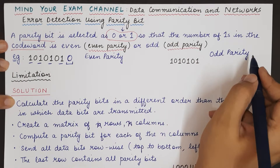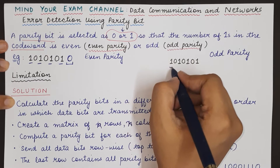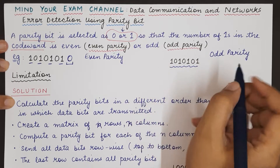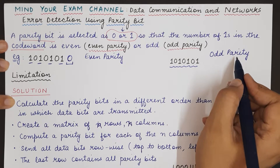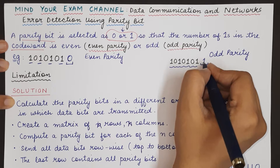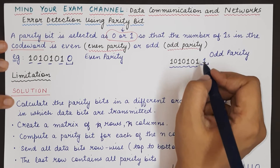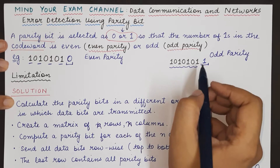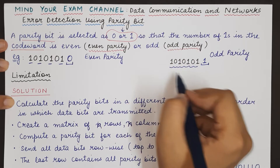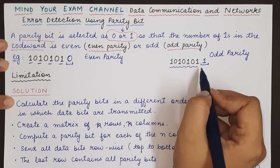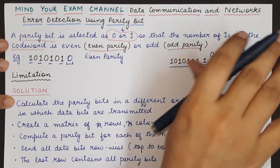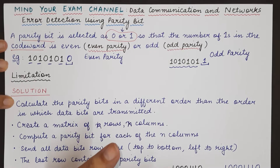Now if we are following odd parity and this codeword has an even number of 1s, but we need to make the total odd, the parity bit we append will have a value of 1. With this parity bit, the total number of 1s becomes odd — in this case 5. This is how the value of the parity bit is calculated.